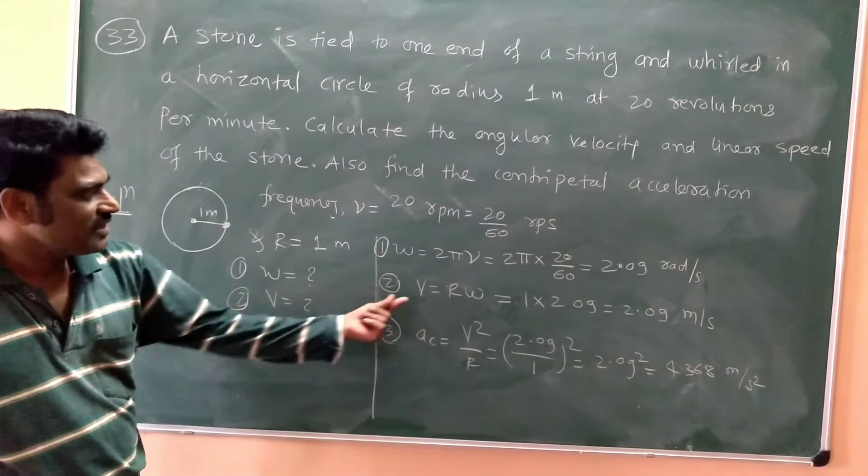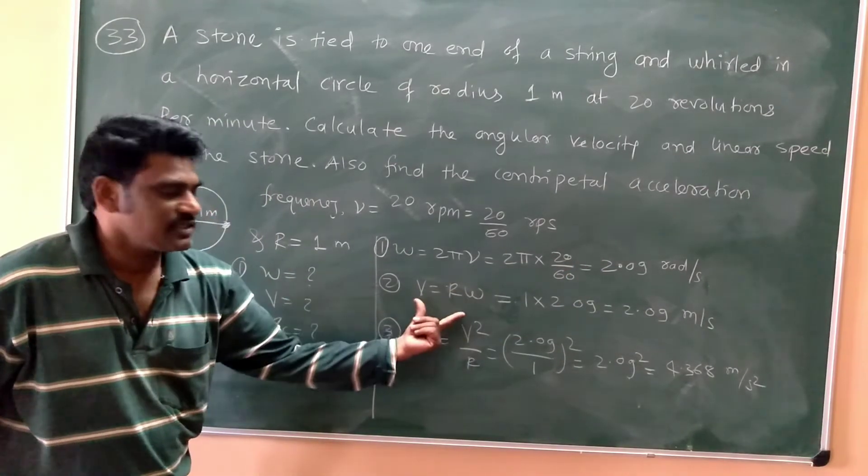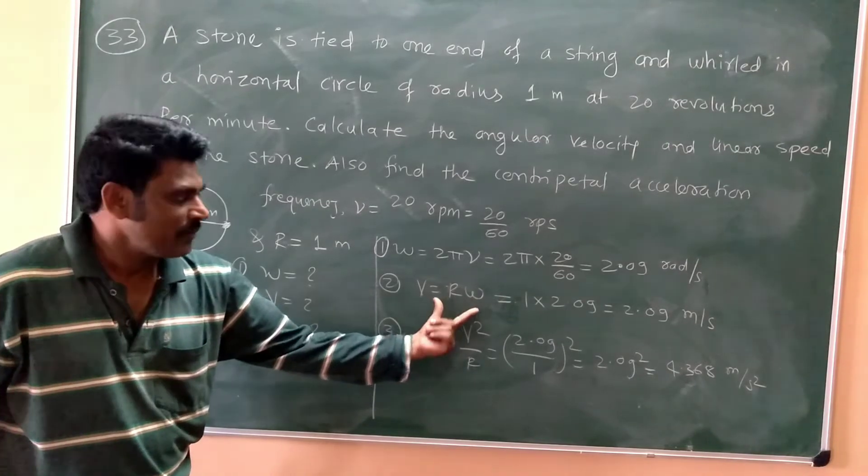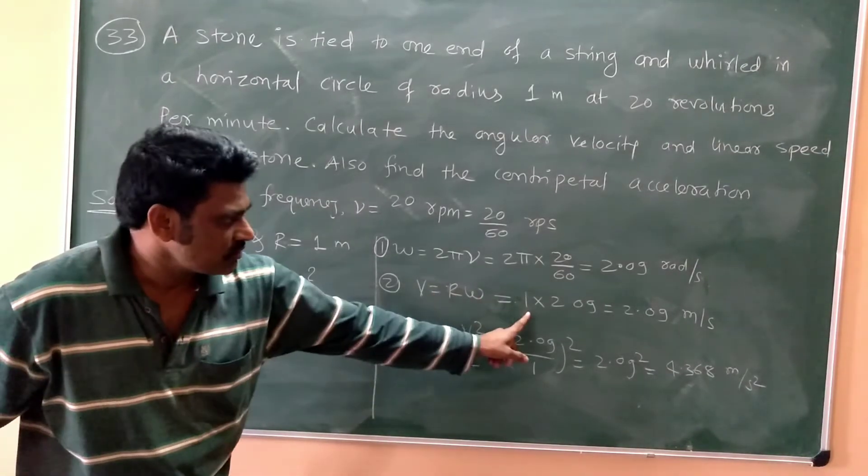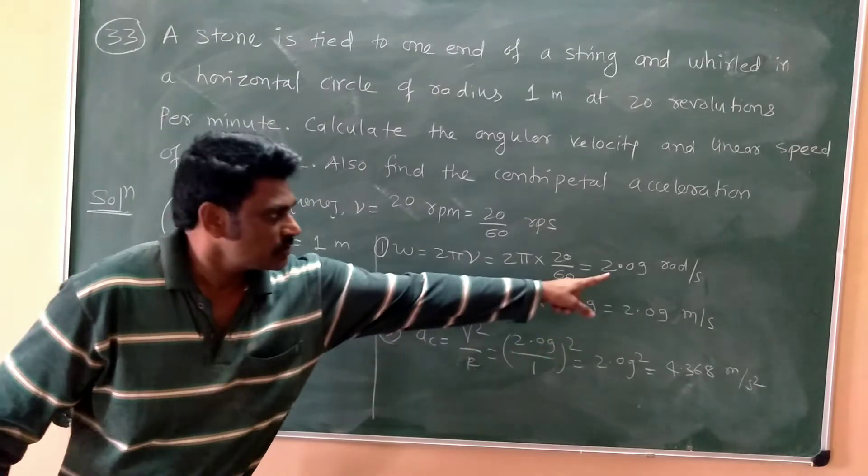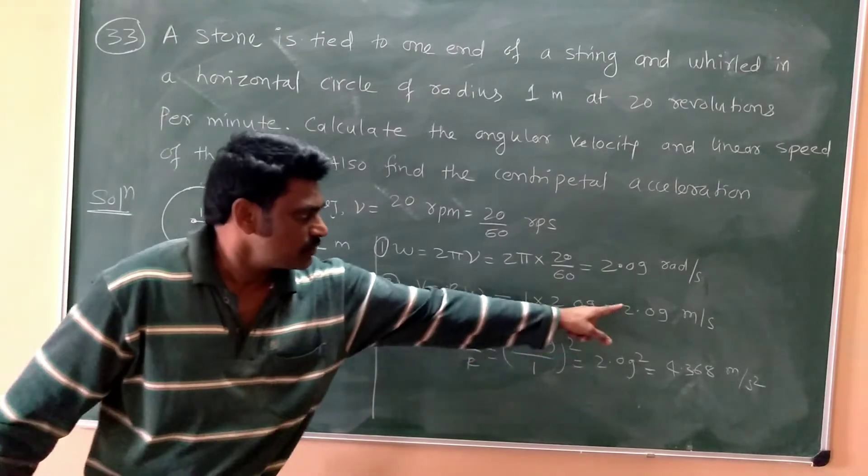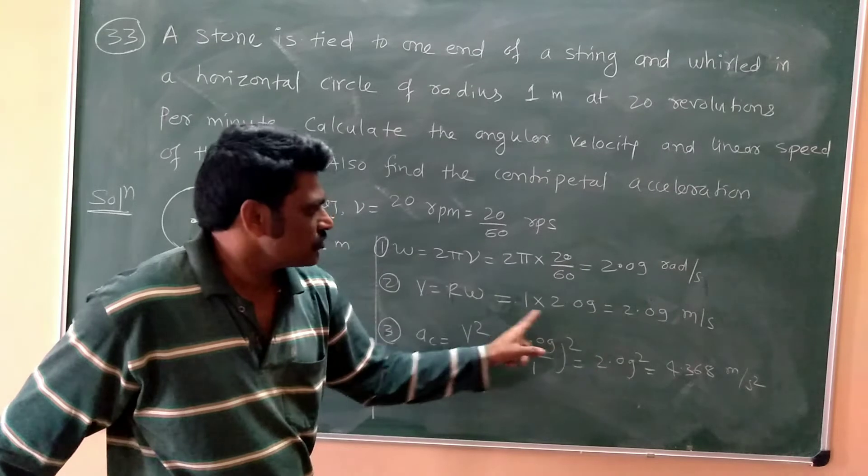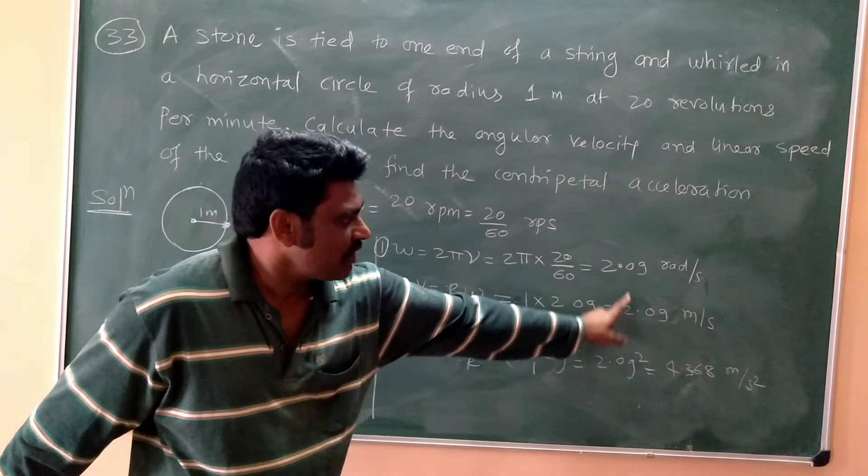Now the relation between linear speed and angular speed is V equals R omega. So V is, R is 1 into this we have calculated, you will put here. Do this calculation, you will get the same, because this is 1, 2.09, same value you will get because this is 1.